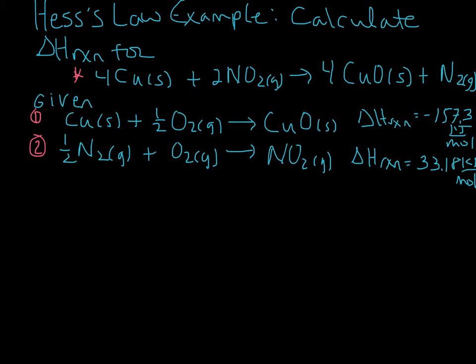The general strategy is to look at each reaction individually and see if the reactants and products that are in the target reaction are on the correct sides of the equation — are they reactants or products as shown in the target? We also want to look at the coefficients and see if we need to multiply or divide the entire reaction, which would change those coefficients.